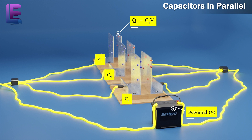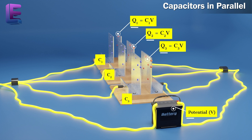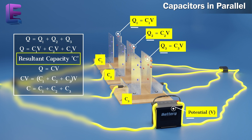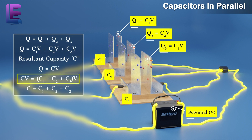The charge on the second capacitor Q2 is equal to C2V. The charge on the third capacitor Q3 is equal to C3V. So the total charge Q is equal to Q1 plus Q2 plus Q3, which equals C1V plus C2V plus C3V. If the resultant capacitance is C, then Q is equal to CV. Hence, CV is equal to (C1 plus C2 plus C3) times V. Therefore, in parallel connection, C is equal to C1 plus C2 plus C3.